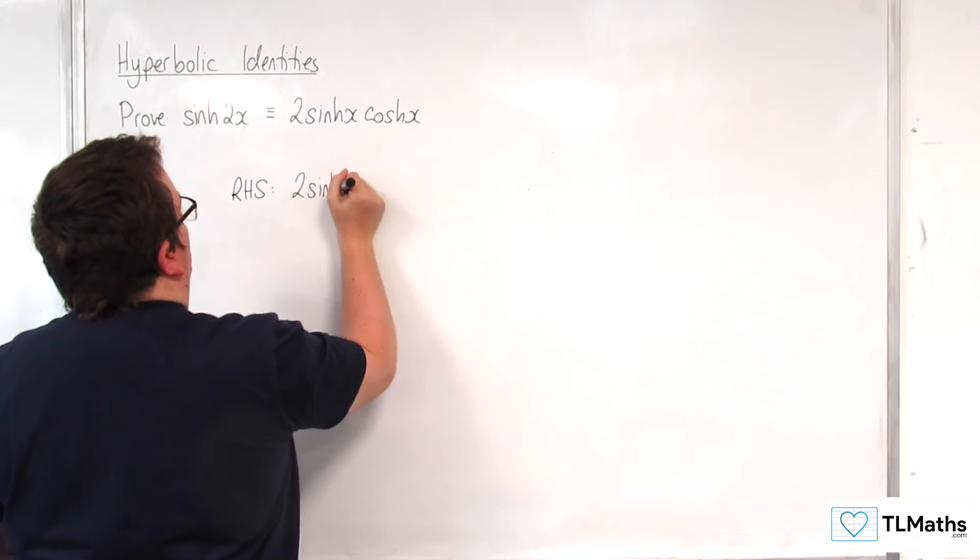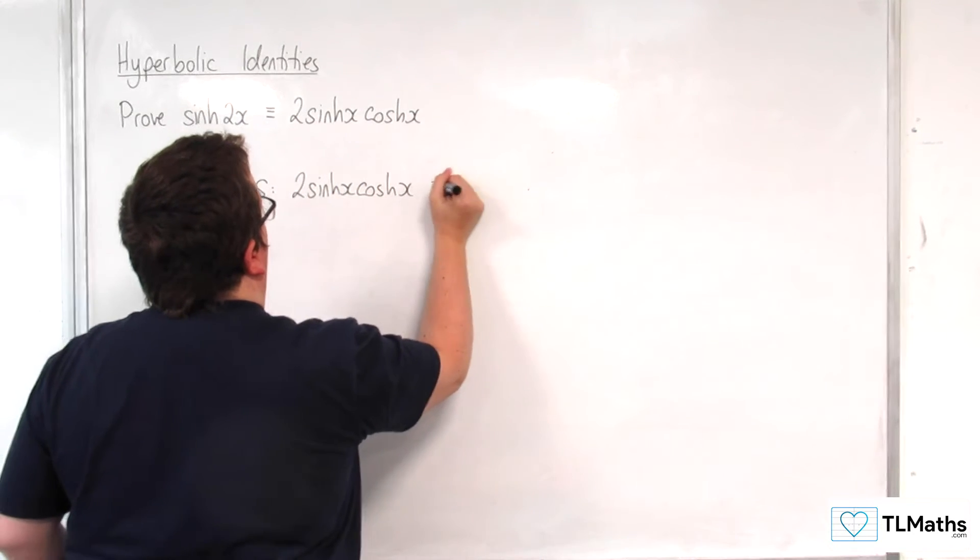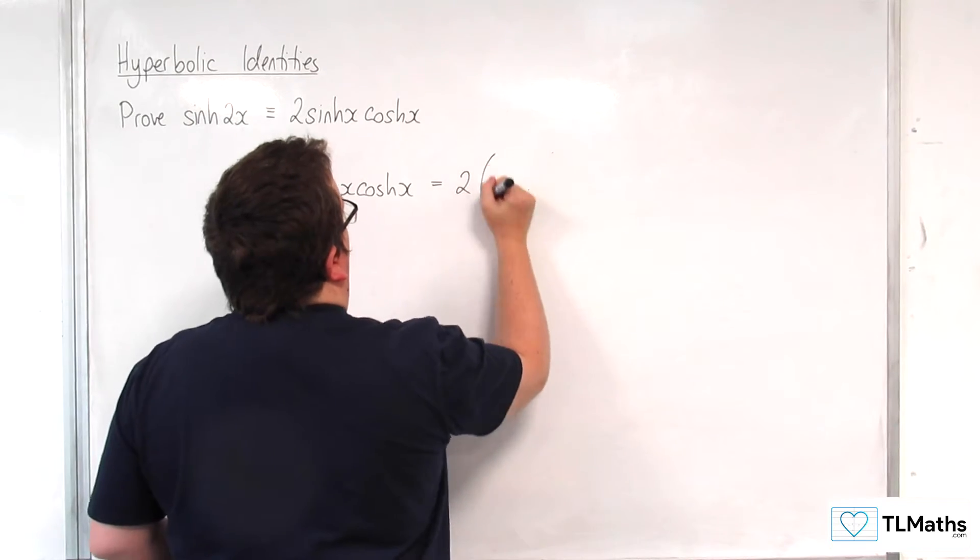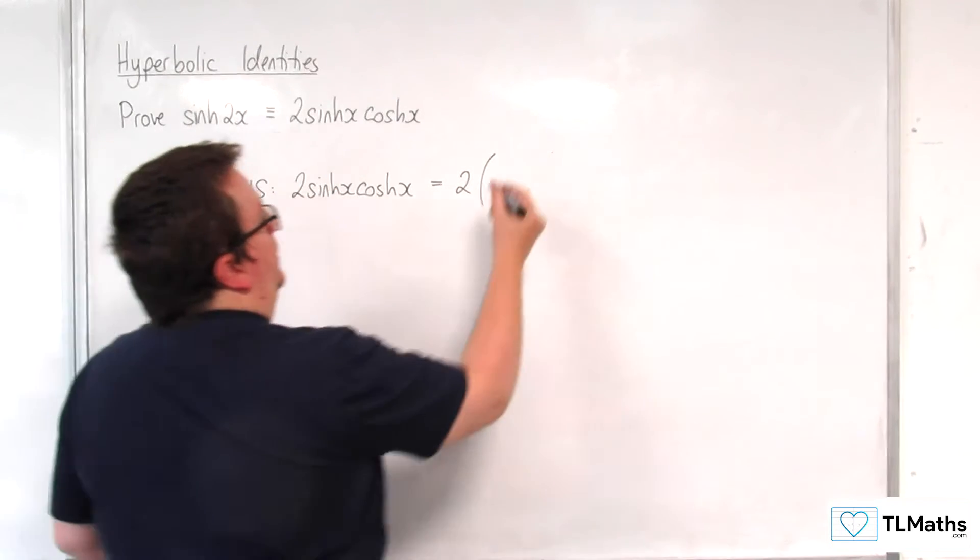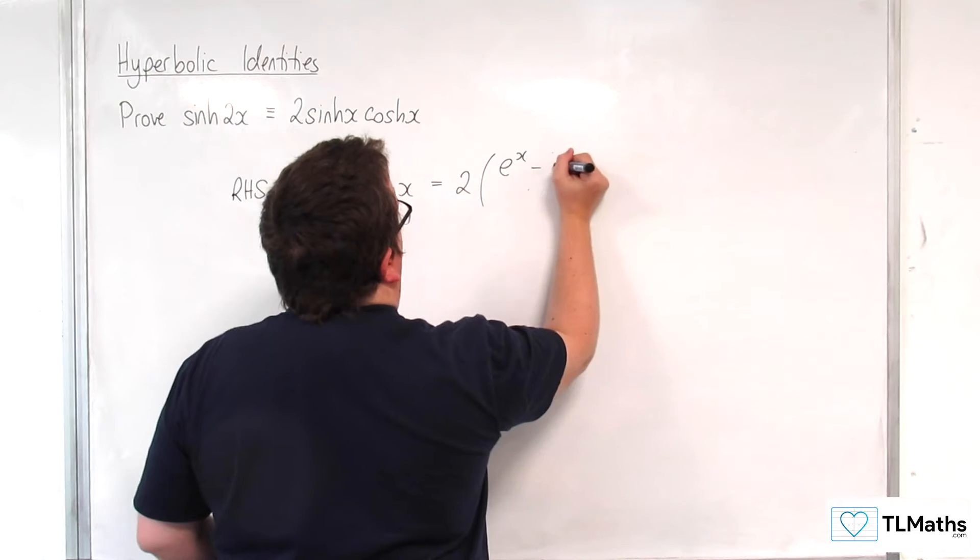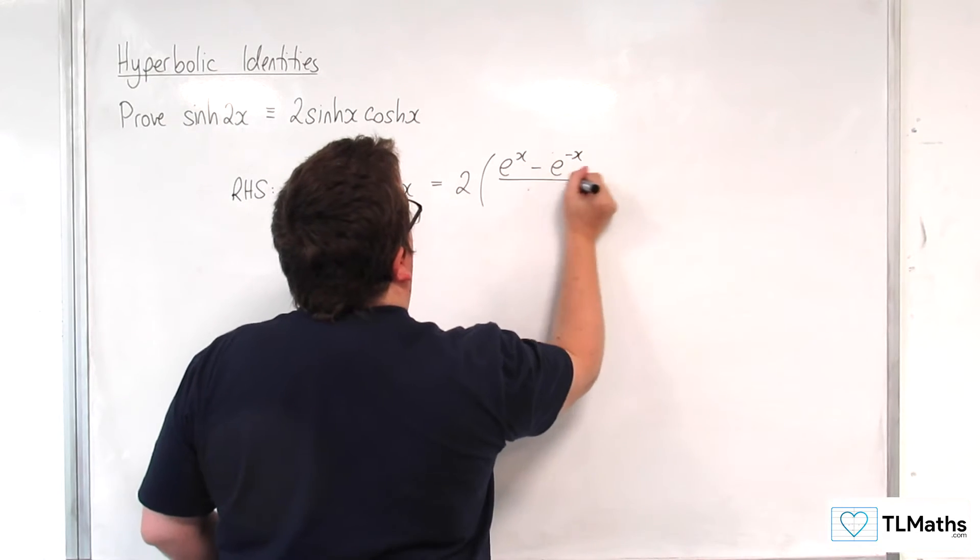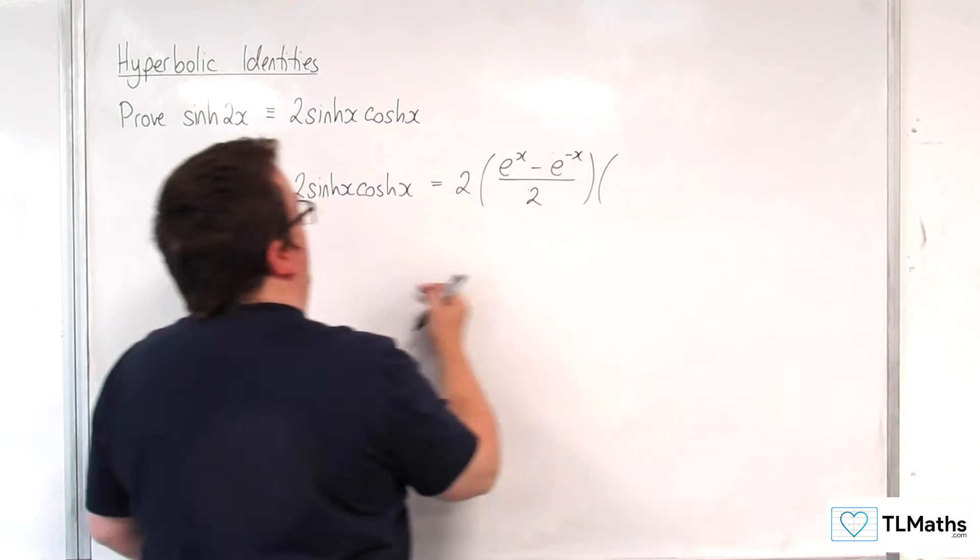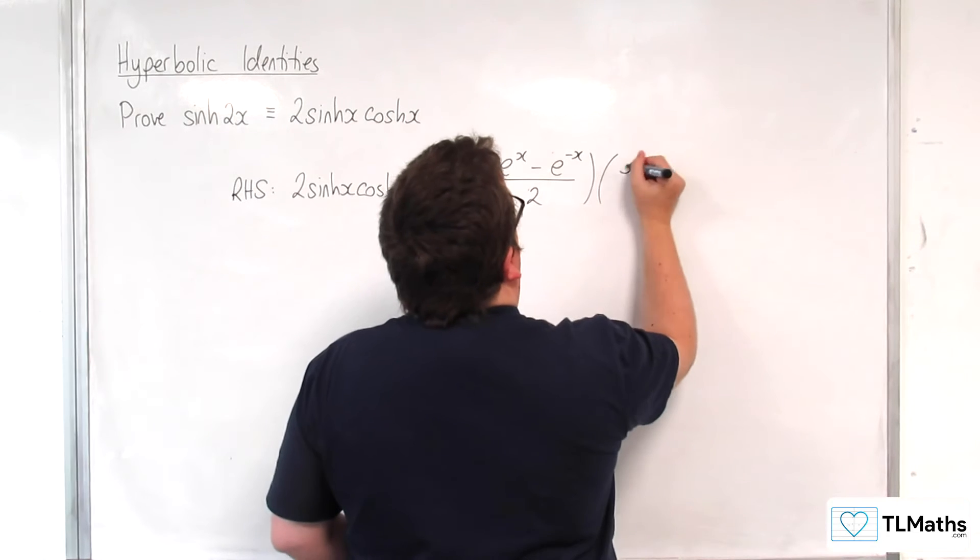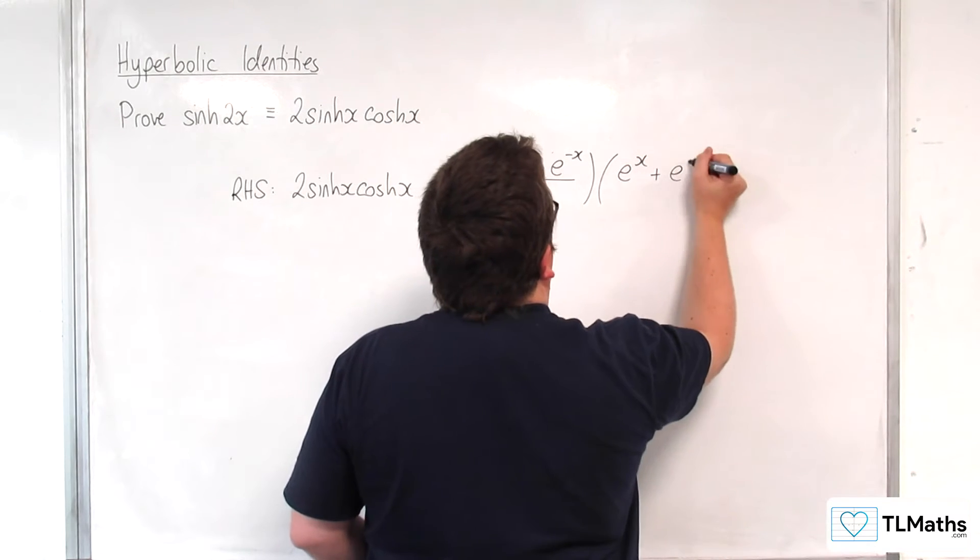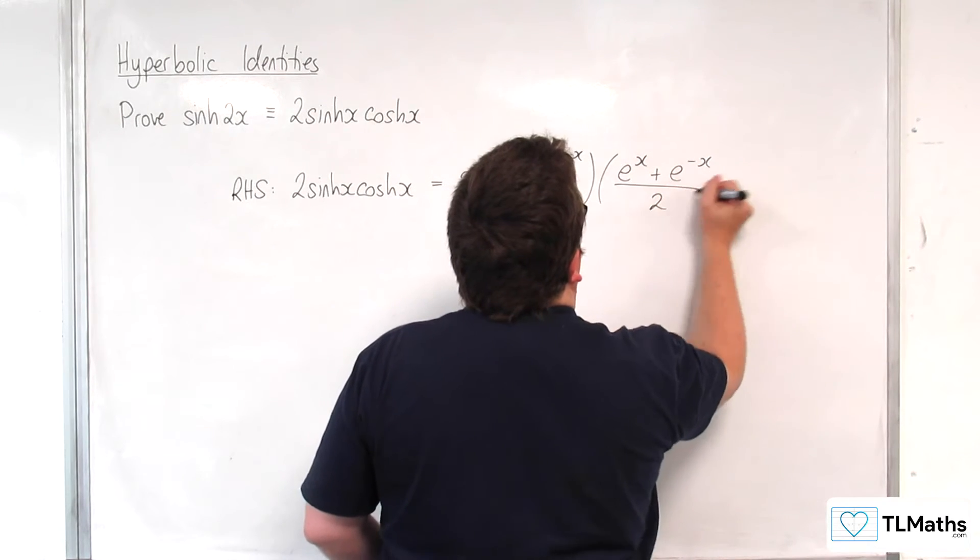2 sinh x cosh x. And so that's 2 lots of sinh x, which is e to the x take away e to the minus x over 2, and cosh x is e to the x plus e to the minus x over 2.